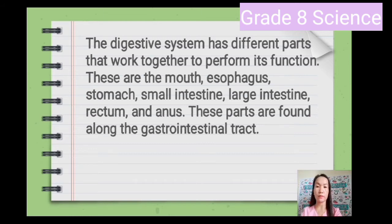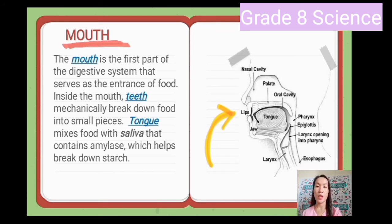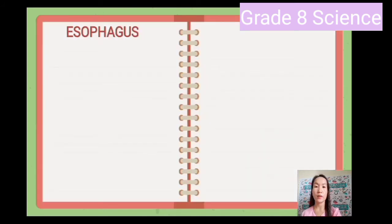The first part is the mouth. The mouth is the first part of the digestive system that serves as the entrance of food. Inside the mouth, teeth mechanically break down food into small pieces. The tongue mixes food with saliva that contains amylase, which helps break down starch. The next part is the esophagus.